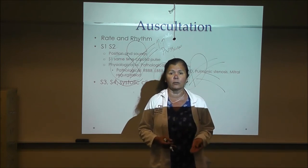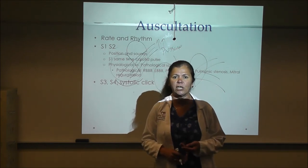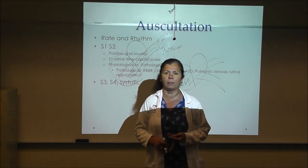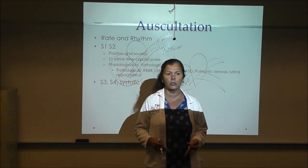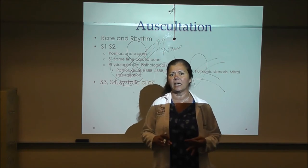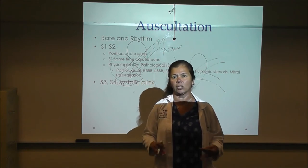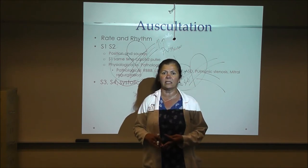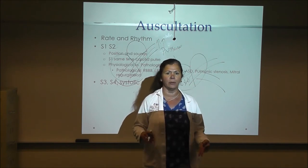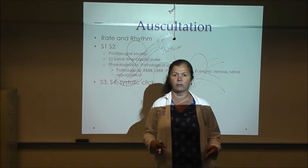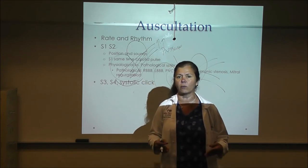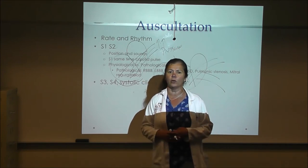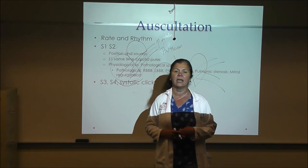Examples that can produce S3 include CHF, but also any disease that gives you anasarca or pulmonary edema, such as liver cirrhosis, nephrotic syndrome, glomerulonephritis, etc.